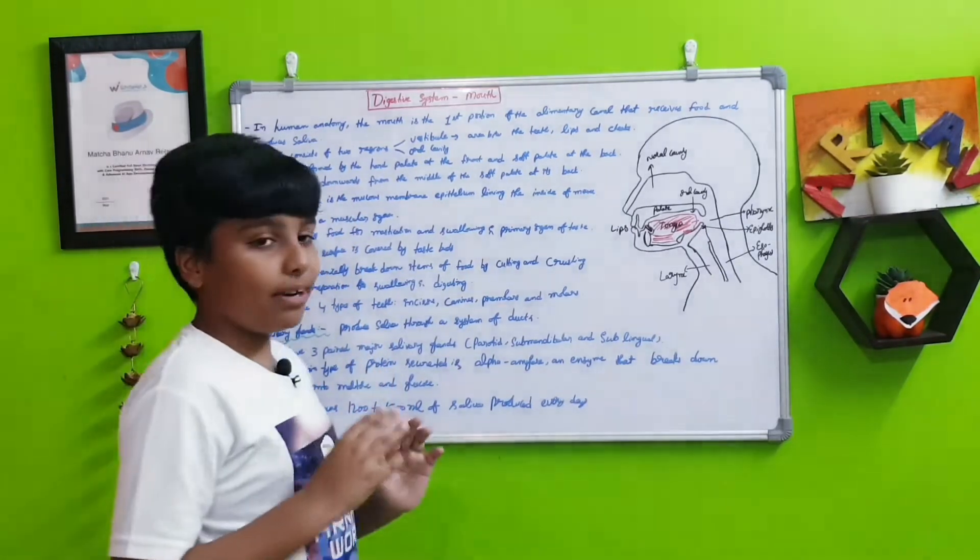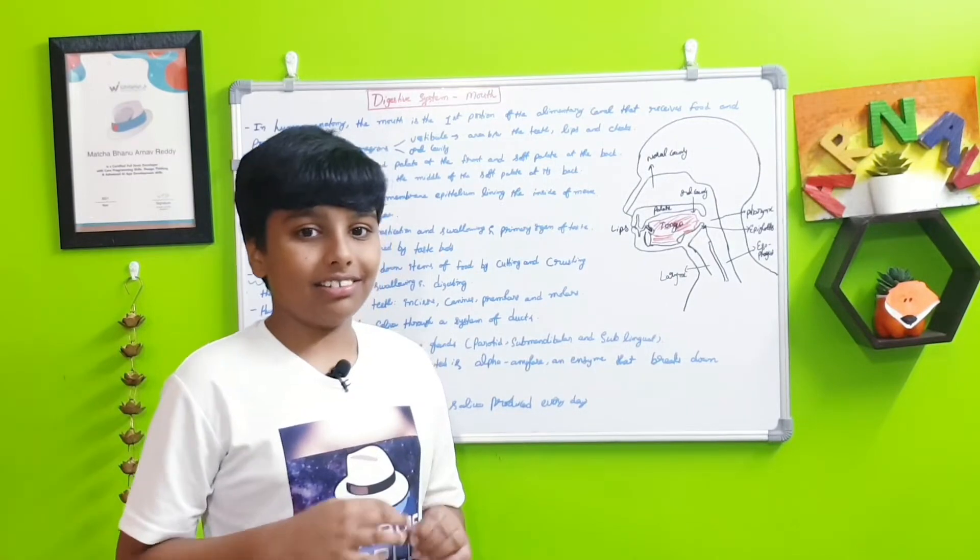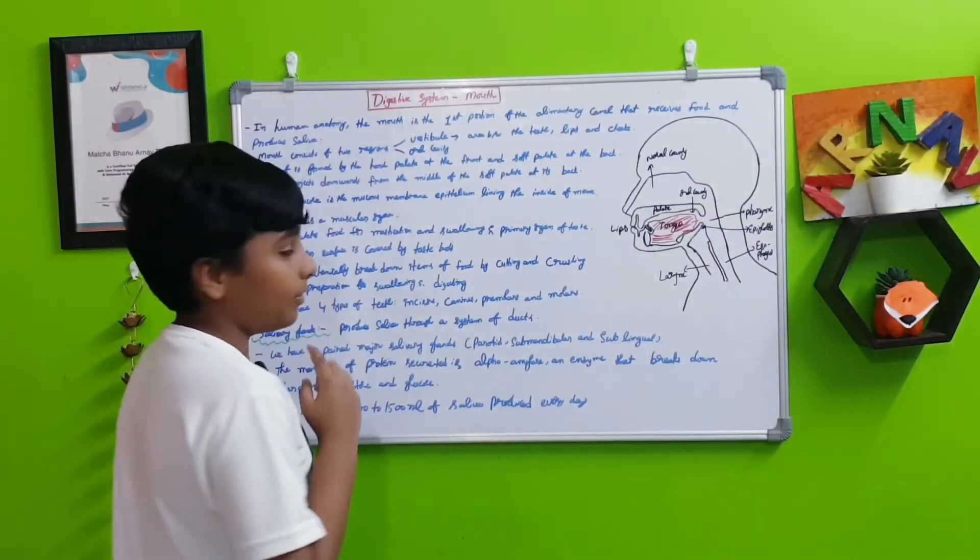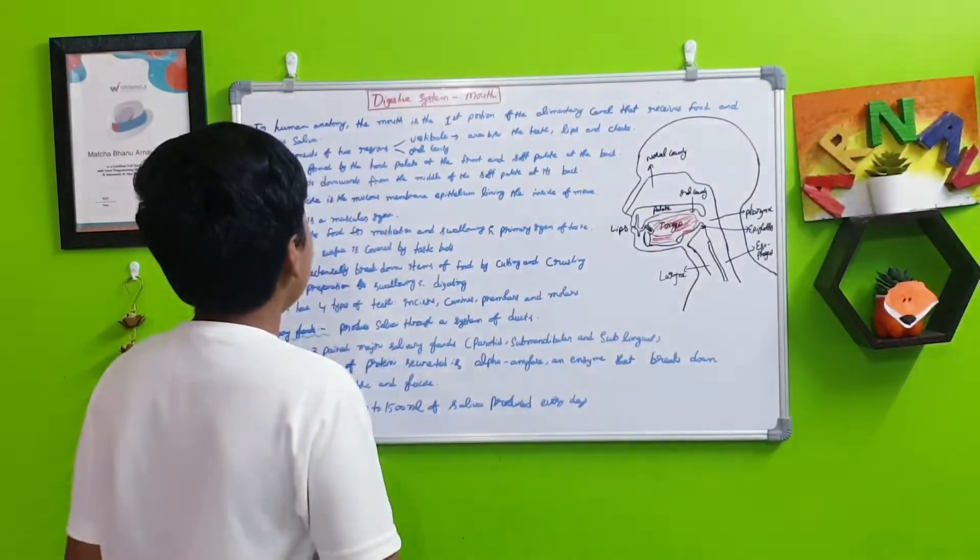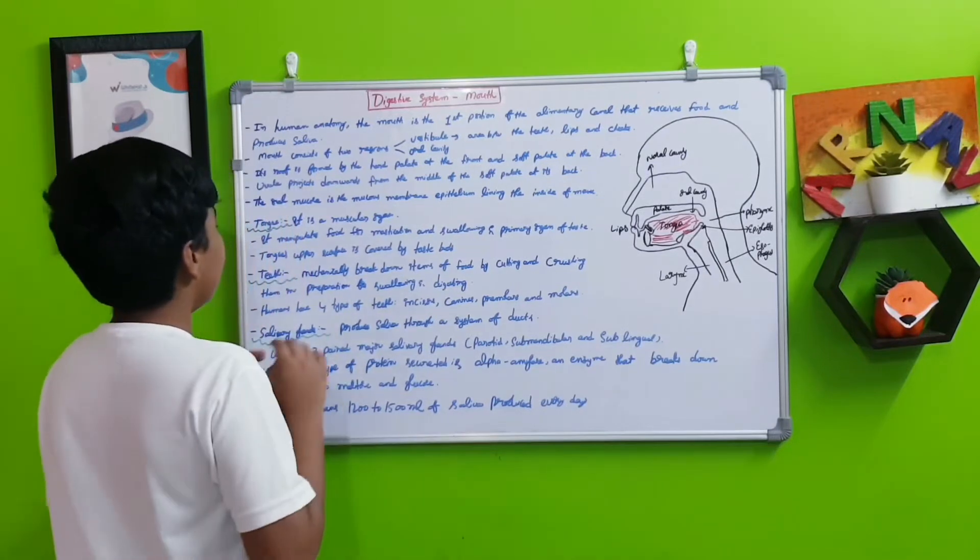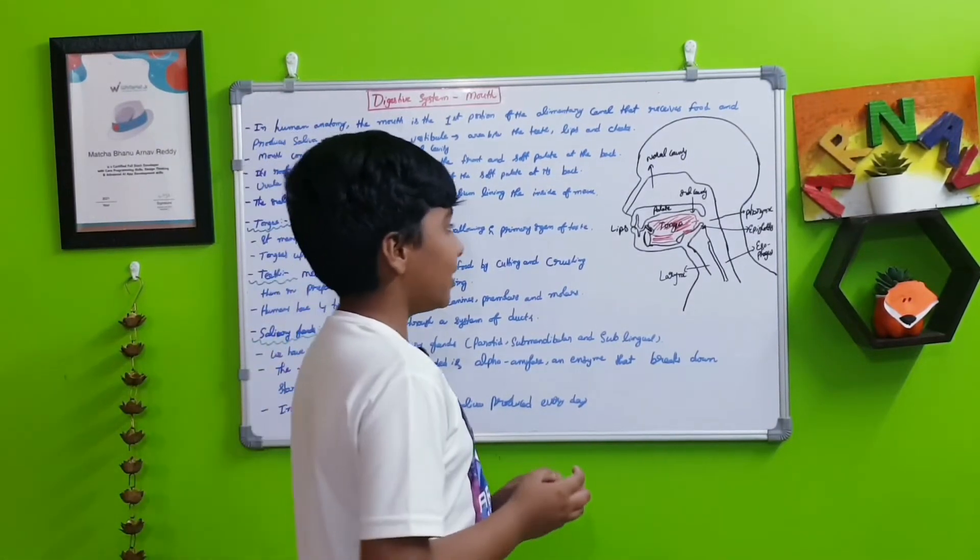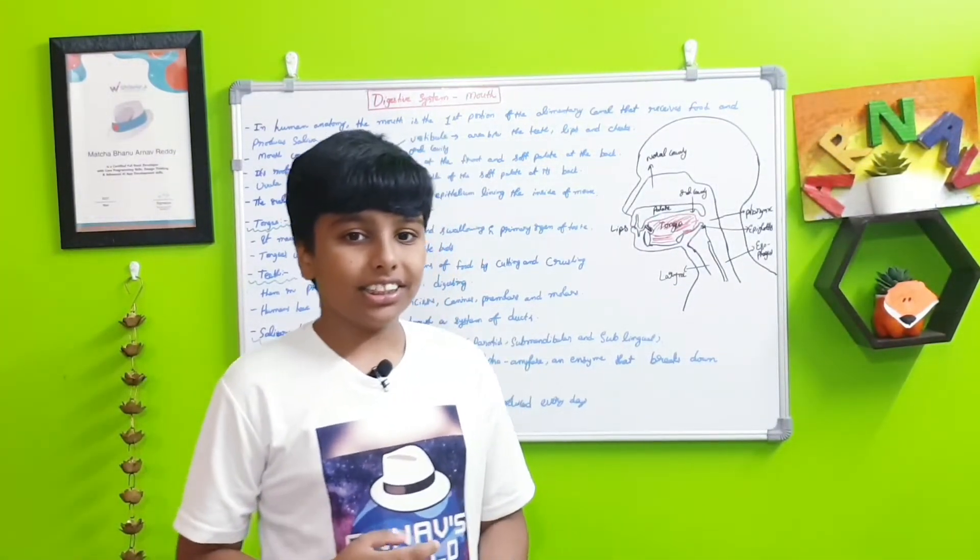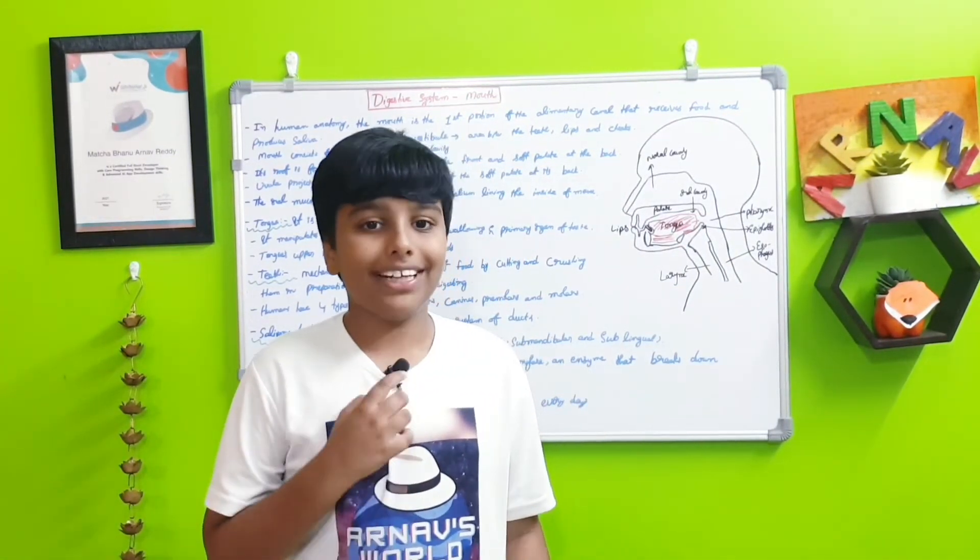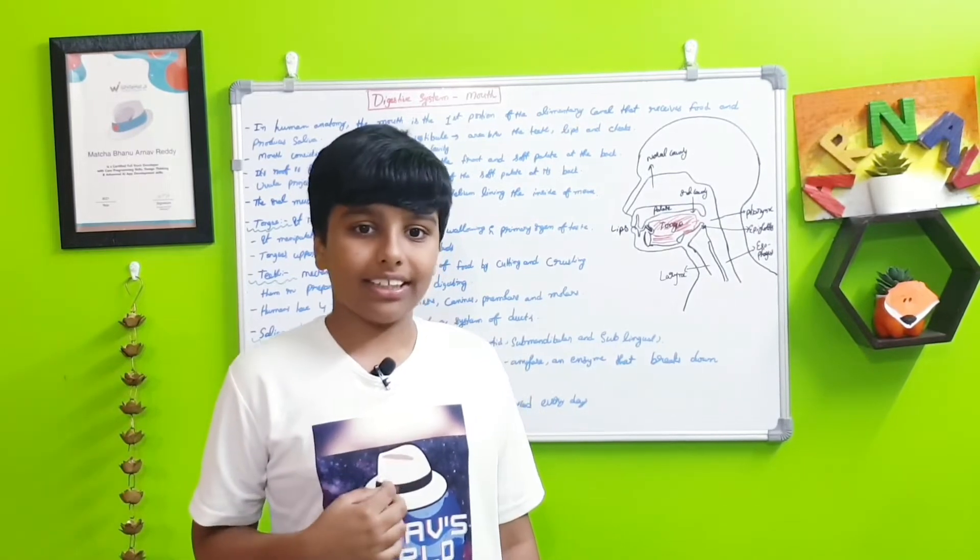The first part is the tongue. It is a muscular organ that manipulates food for mastication and swallowing, and is the primary organ of taste.